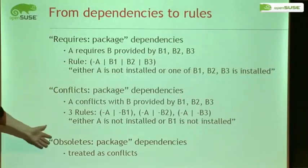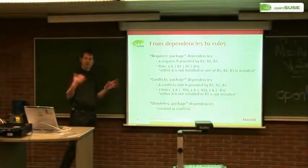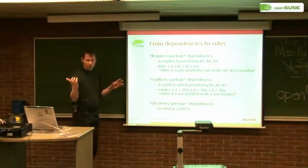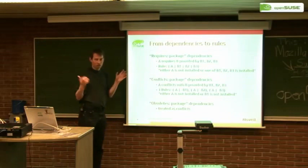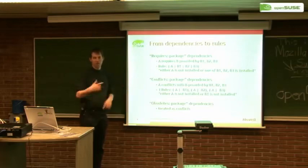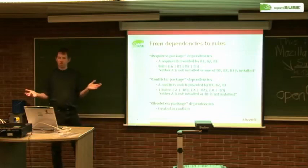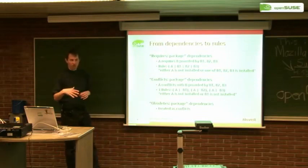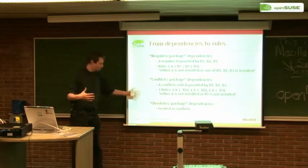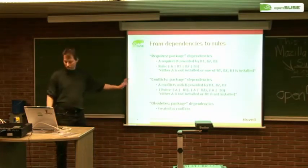For direct obsoletes already in the package, that's the handling. But there are also indirect obsoletes: packages with the same name. If you have package A version 1 and package A version 2, you can't install both because they obsolete each other. This is where you can do special casing — in openSUSE, if you have a kernel, a patch comes in and doesn't automatically de-install the old kernel, so you drop the conflict rules for those special cases. But normally, packages with the same name get a conflict rule.